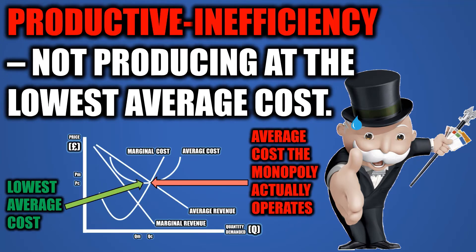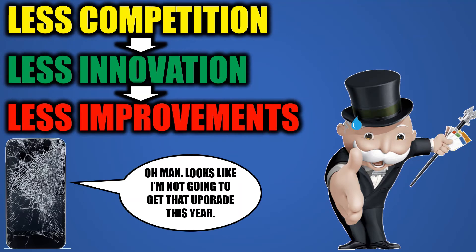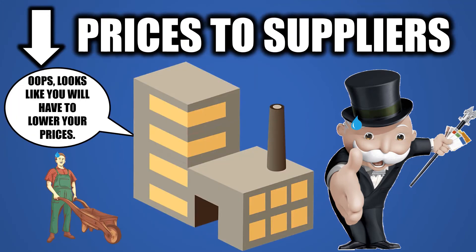This could lead to productive inefficiency, where a monopoly is not producing at the lowest average cost. In addition, the high prices lead to allocative inefficiency, where the average revenue — which in this case is the price — is greater than the marginal cost. The lack of competition means monopolies don't need to invest in innovation, so products wouldn't be improved. This lack of bargaining power also extends to suppliers, so monopolies can pay lower prices to suppliers, again with little consequence.